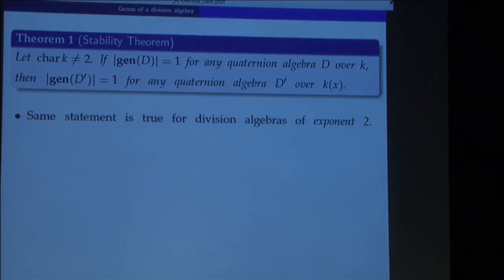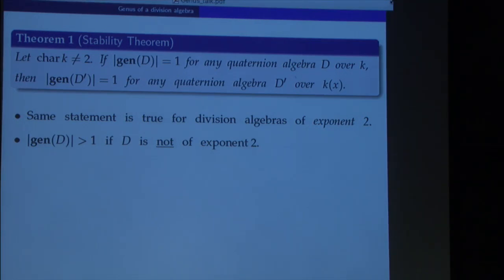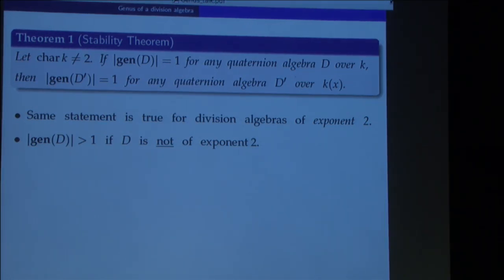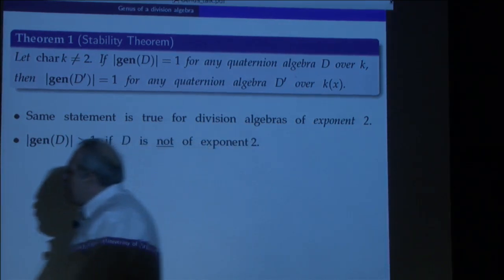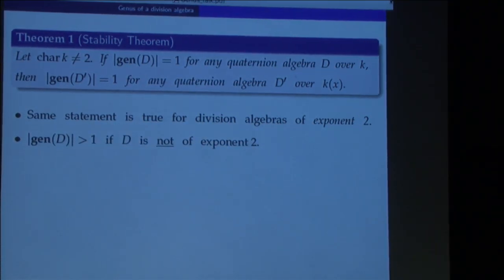You can do better — you can look at fields of some Severi-Brauer varieties, but that's the essence of this result. Now I get to the earlier comment: we know that the genus of every algebra that is not of exponent two is a different question, related to quadratic forms in four variables. The precise relationship is the following: if we look at the quaternion algebra corresponding to a pair (a, b) over some field k, then its reduced norm is a specific quadratic form.